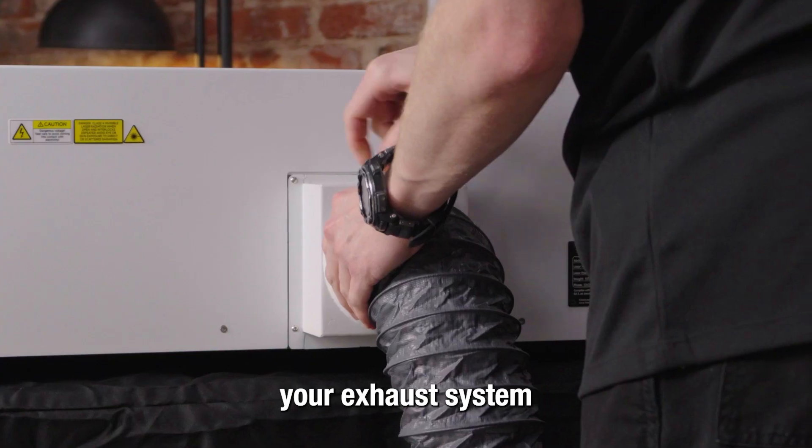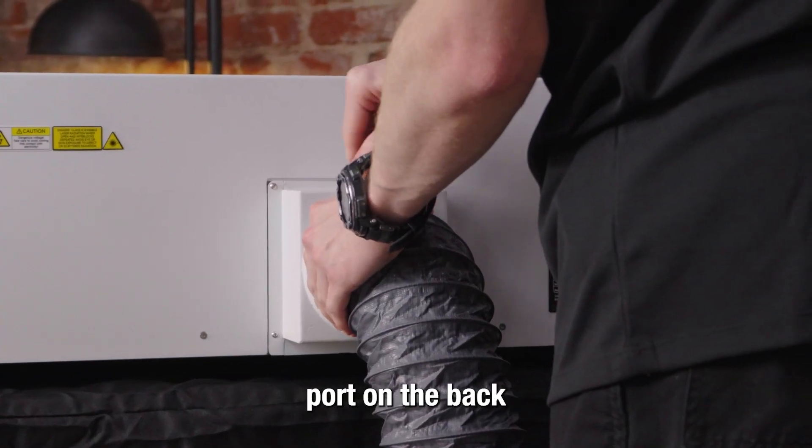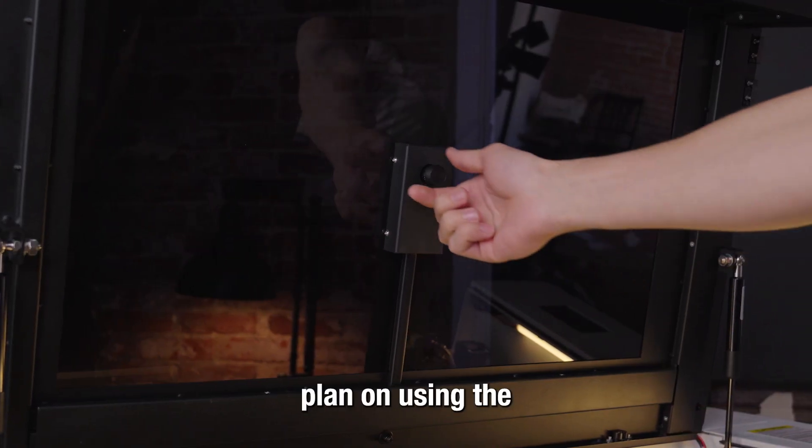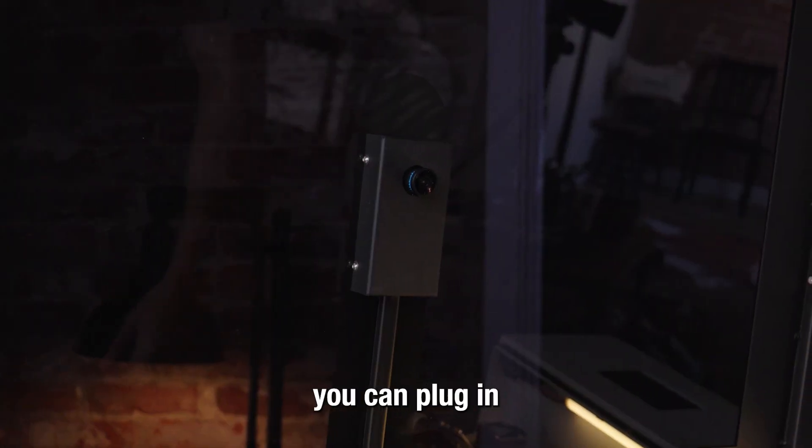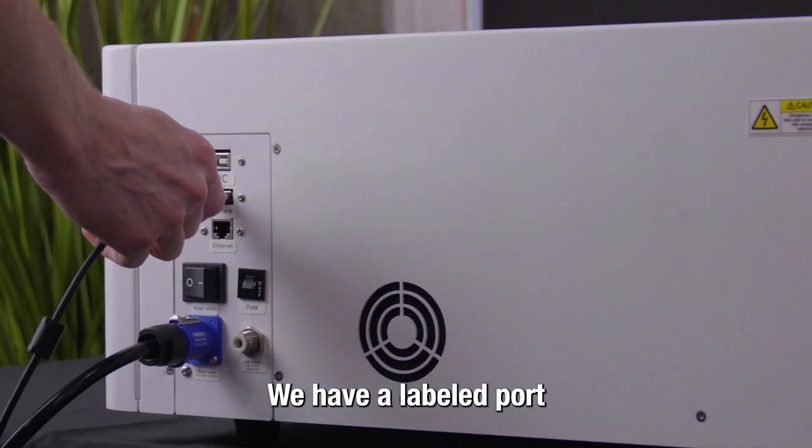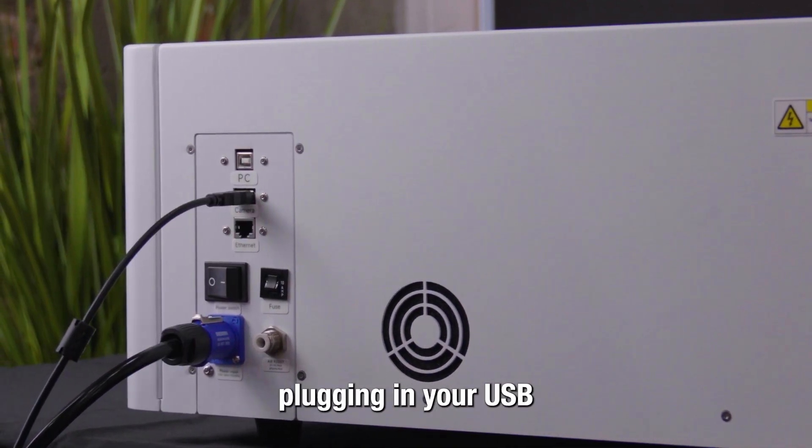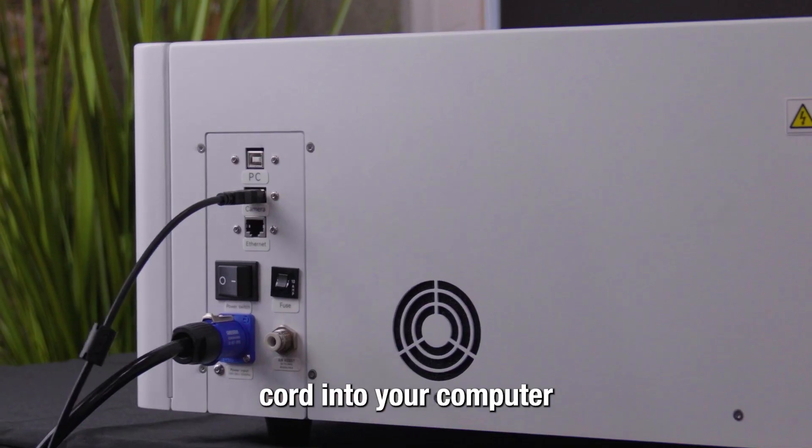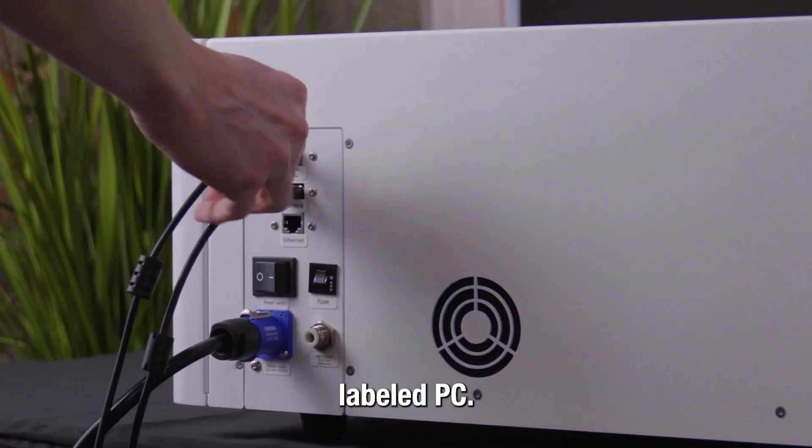Connect your exhaust system to the 4-inch duct port on the back of the machine. If you plan on using the internal camera on our XRF, plug in the USB type A cord to the back of the machine at the labeled port. Next, plug your USB type B cord into your computer and into the back of the machine labeled PC.